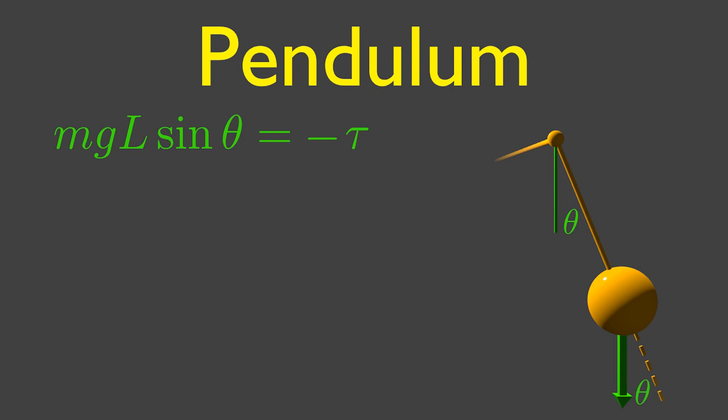We can also write Newton's law. Torque equals angular acceleration times inertia. Inertia is just mass times length squared. We can combine these two equations to get something that is close, but not quite the same as our fact number two.